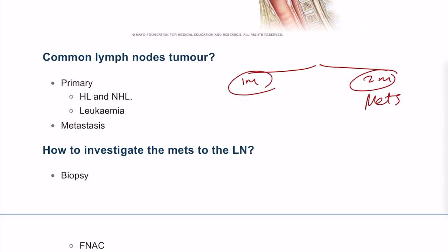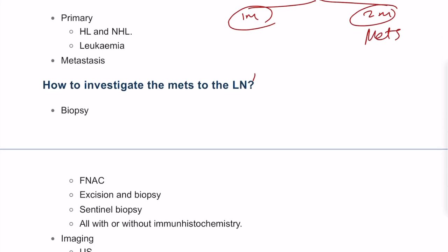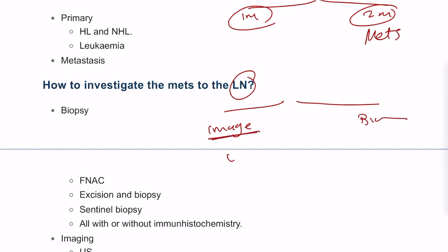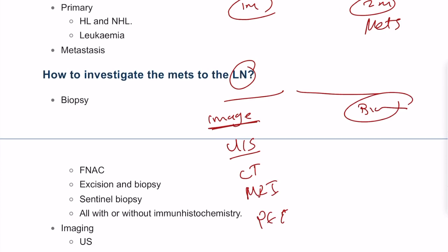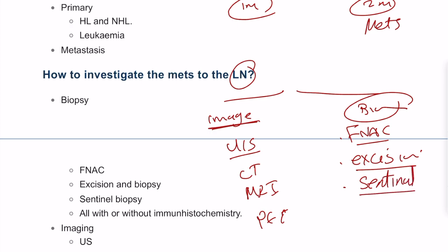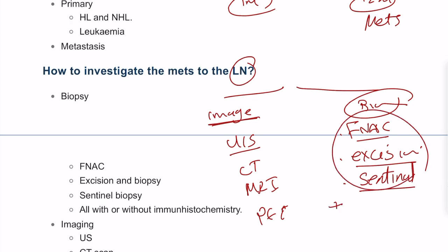For lymph node tumors, these can be primary (leukemia, lymphoma) or secondary (metastatic). To investigate a metastatic lymph node, imaging options include ultrasound, CT, MRI, or PET-CT scan. For biopsy, options include fine needle aspiration cytology, excision of the whole lymph node, or sentinel lymph node biopsy — all of which can be performed with or without immunohistochemistry.